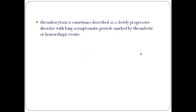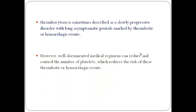About prognosis: thrombocytosis is sometimes described as a slowly progressive disorder with long asymptomatic periods marked by thrombotic or hemorrhagic events. However, well-documented medical regimens can reduce and control the number of platelets, which reduces the risk of thrombotic or hemorrhagic events. The lifespan of a well-controlled thrombocytosis patient is well within the expected range for a person of similar age without thrombocytosis.